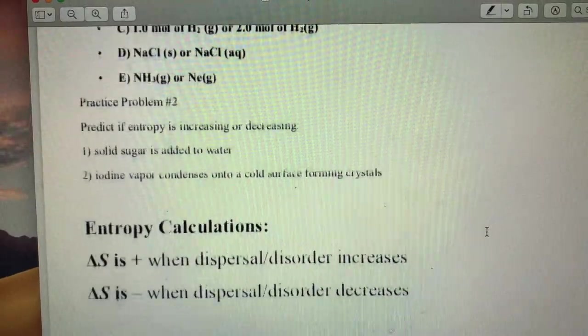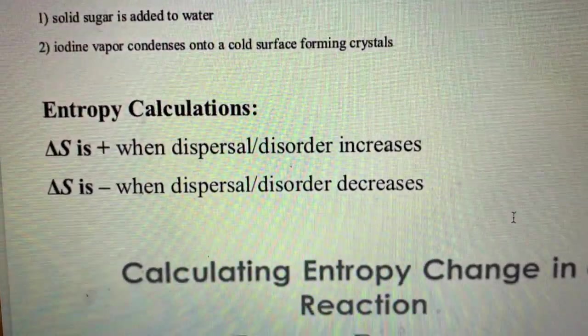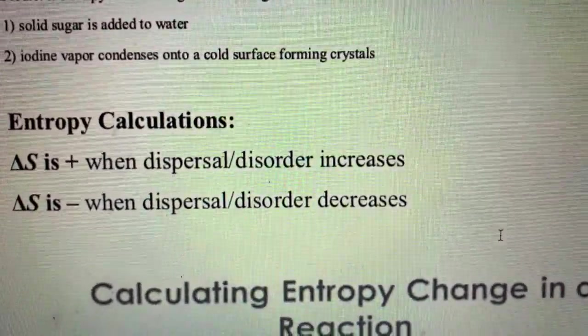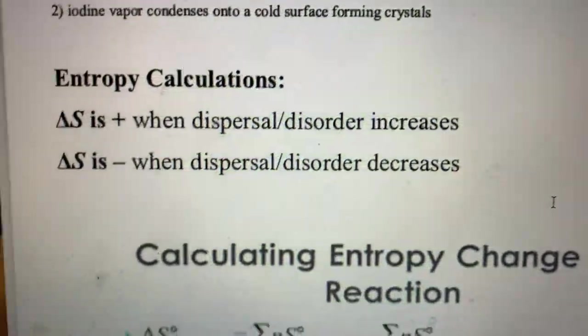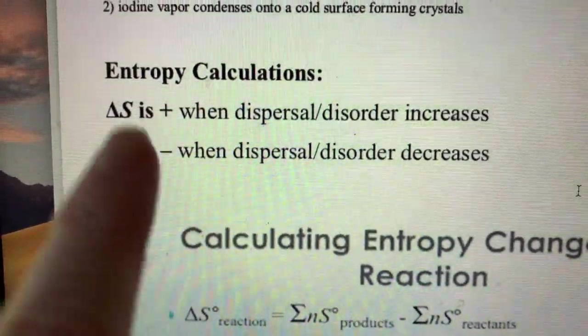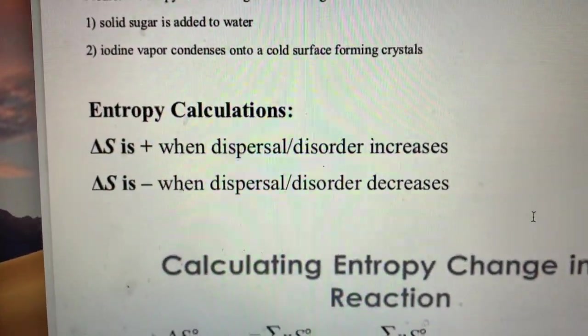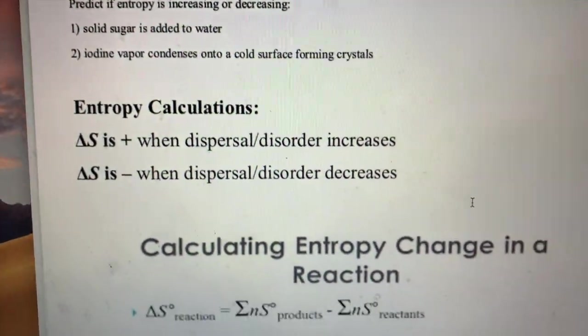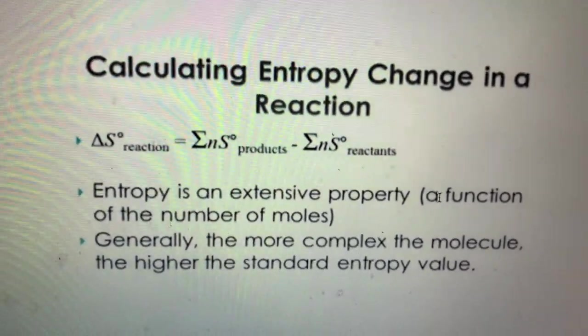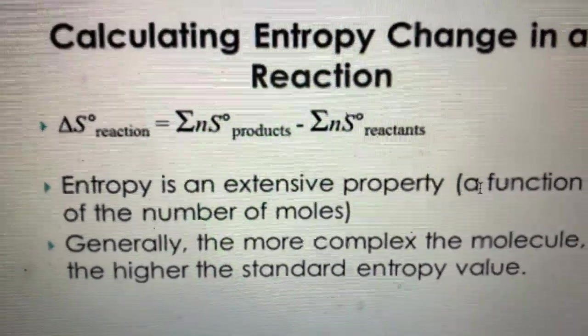Other than just making predictions, we actually are able to do some calculations with this and solve for the overall entropy of the system. When we do this we are looking to see whether we get an overall delta S that's positive or negative. If it's positive, it means that your entropy is going up. If it's negative, it means that your entropy is going down.